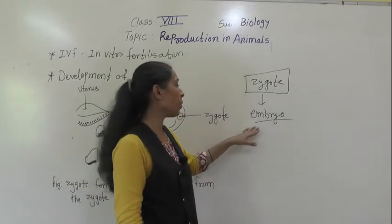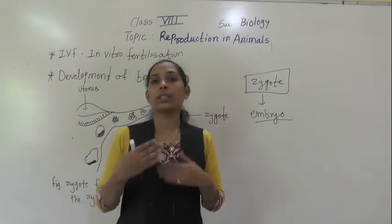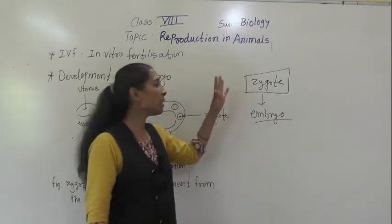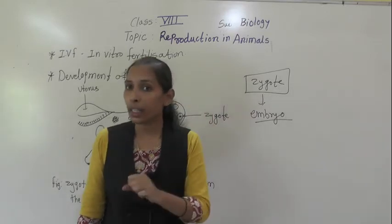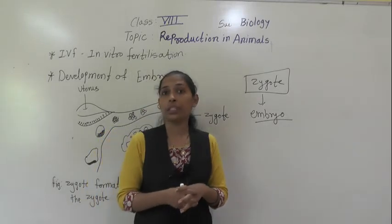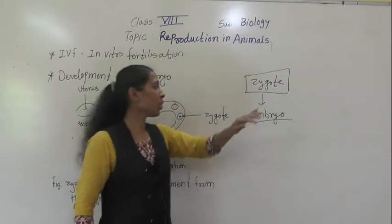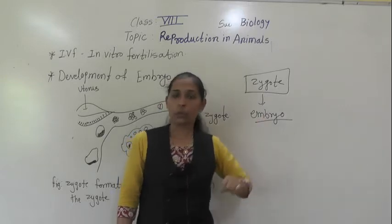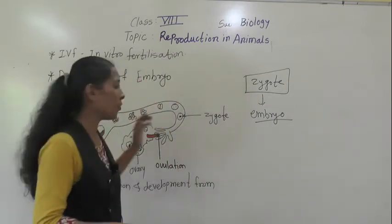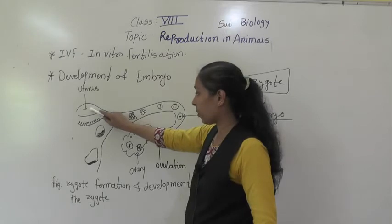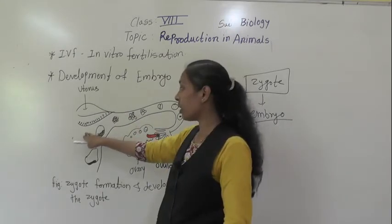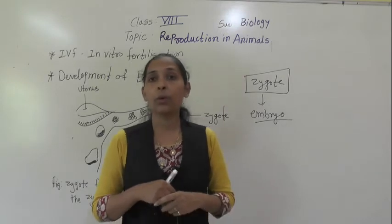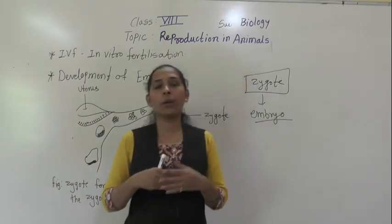How does the embryo develop from the zygote? Once the zygote forms, it divides repeatedly to form a number of cells. Those cells begin to form tissues, and the tissues start to produce different organs of the body. This developing structure of the zygote is called an embryo. After that, this embryo gets embedded in the wall of the uterus, where the further development of the embryo takes place.